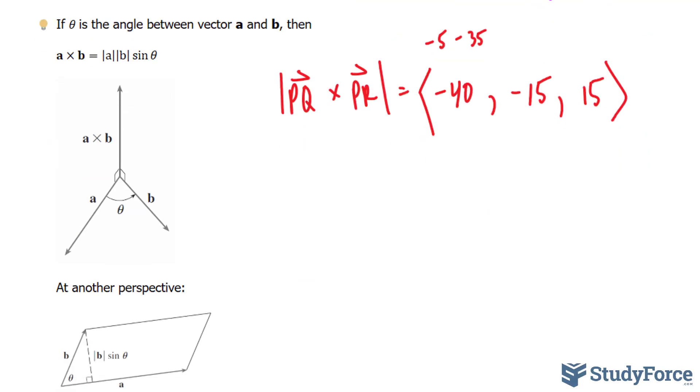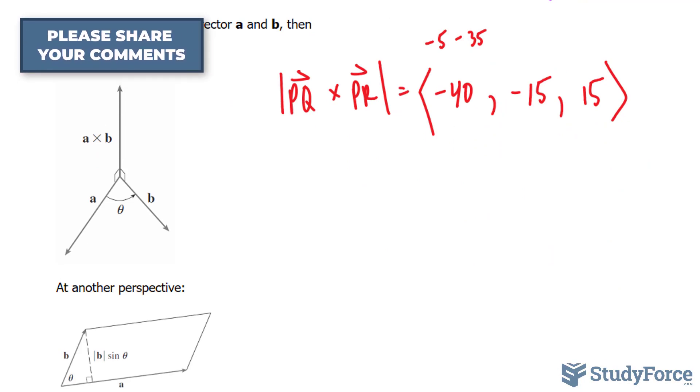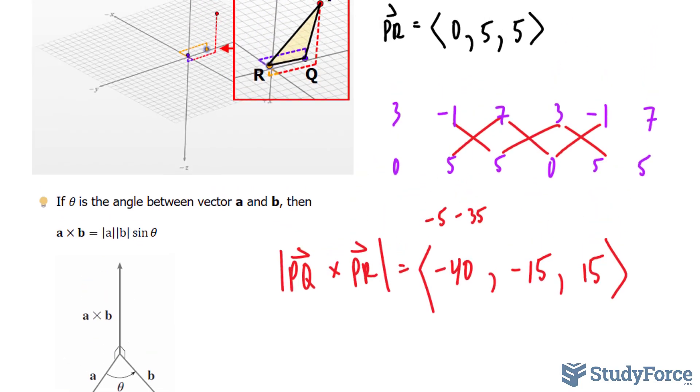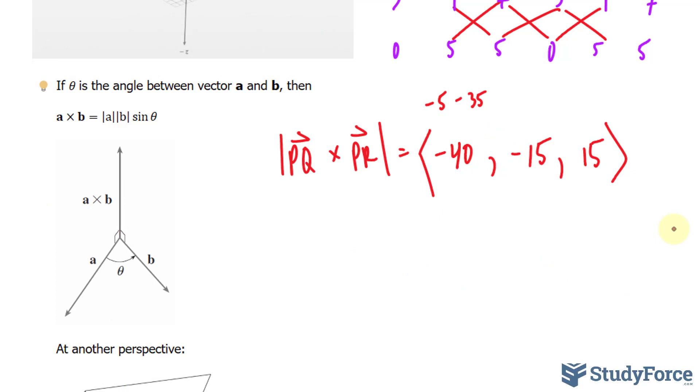We can find the length of this by using the distance formula, because by finding the length, we're actually finding the area of the parallelogram in which it makes up. Of course, once we do that, we'll divide it by 2 because we want the area of the triangle only. Let's go ahead and find the distance.